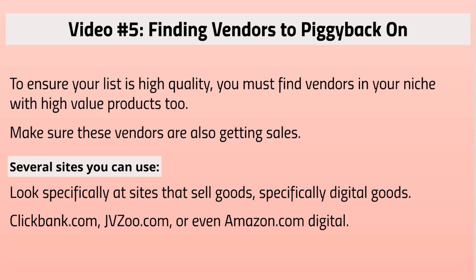You can use ClickBank.com to find vendors, and it's a great site because ClickBank will actually show you stats on how well a vendor's product is selling. It encompasses many different niches — everything from wealth to religion and broad spectrums. There is also JVZoo.com, but keep in mind JVZoo specifically targets primarily business-to-business type lists. Let's take a look at these sites so you can get a better idea of how to find vendors to piggyback on.